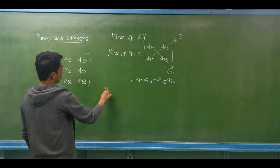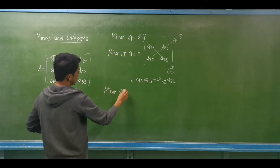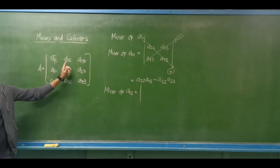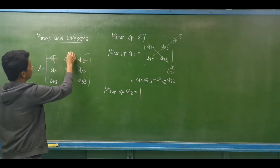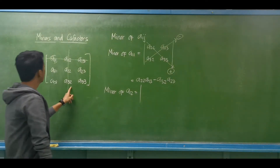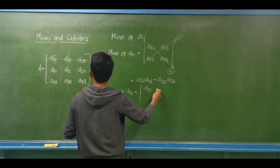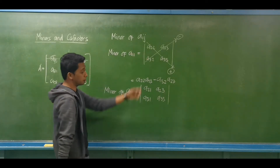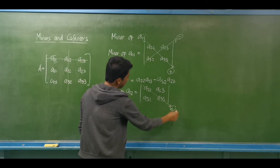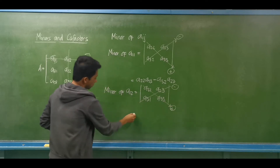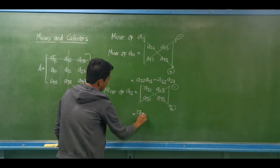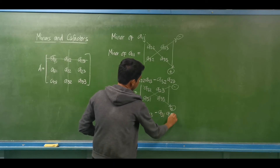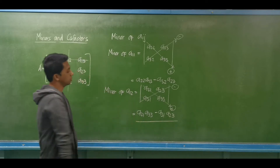Now, to determine the minor of A12, we cross out the first row and the second column. The remaining elements are A21, A23, A31, and A33. Taking the product of diagonal elements — downward diagonal is positive, upward is negative — the minor of A12 equals A21 times A33 minus A31 times A23.